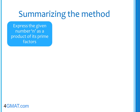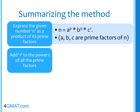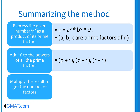To summarize: the first step is to express the given number as a product of its prime factors. Let's say n equals a to the power p, into b to the power q, into c to the power r, where a, b, c are prime factors of n. Add 1 to the powers of all prime factors, resulting in (p+1), (q+1), and (r+1). The last step: multiply the results — the number of factors for n equals (p+1) into (q+1) into (r+1).